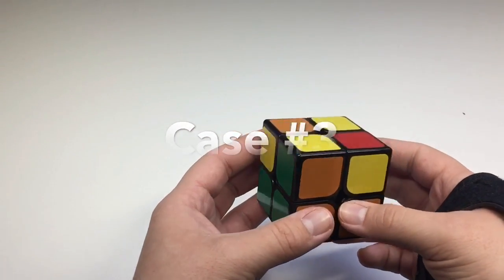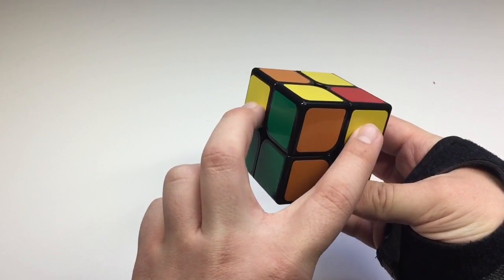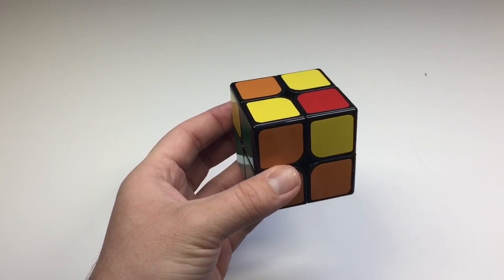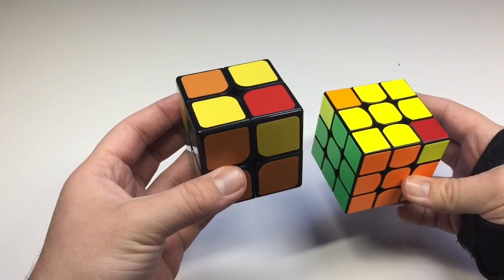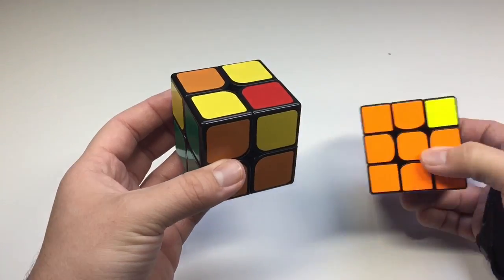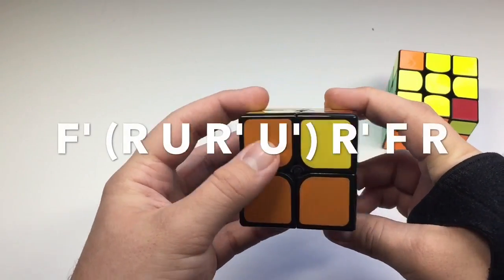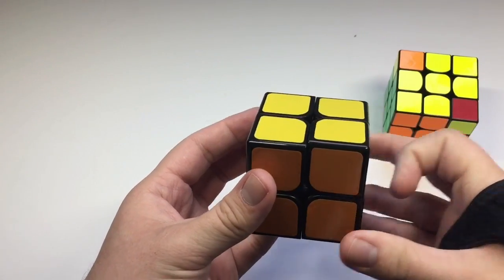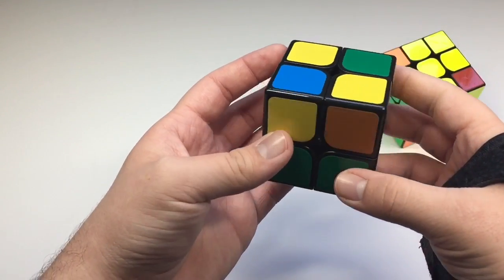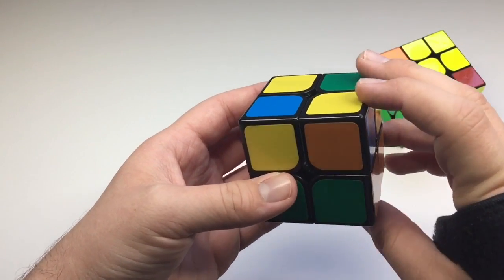The next case looks like this. It has the two diagonal and the two in front. The closest case it looks like is this case on the 3x3. And you could do the same algorithm, which would be this. Or what you could do is hold it right here and do this algorithm.